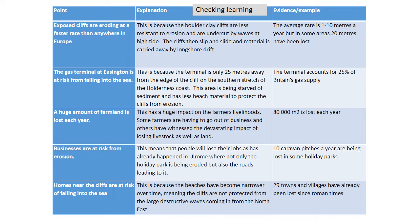As promised, these are the answers to the task you did yesterday - the PEE technique. You've got the points in the first column, the explanations in the second column, and the evidence or example in the third column. For example: 'Exposed cliffs are eroding at a faster rate than anywhere in Europe' - that's your point. 'This is because the boulder clay cliffs are less resistant to erosion and are undercut by waves at high tide; the cliffs then slip and slide and material is carried away by longshore drift' - that's your explanation. 'The average rate is 1 to 10 metres a year, but in some areas 20 metres have been lost' - that's your evidence, which is numerical.